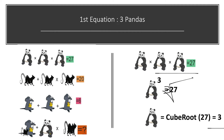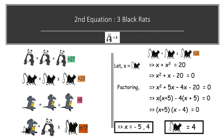Now jumping to the second equation. We have three black rats: between the first two there is an addition sign, and between the last two there is a multiplication sign, equal to 20. Let x equal black rat. The equation becomes x plus x squared equals 20, which rearranges to x squared plus x minus 20 equals 0.